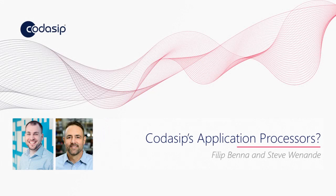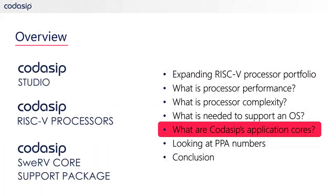Welcome back to the fifth installment of the CODISIP blog series discussing all things RISC-V. My name is Steve Winandi and with me is Philip Benna, Product Marketing Engineer at CODISIP. In our first installment, we took a high-level look at CODISIP's RISC-V processor portfolio. In the second video, we went into more detail on processor performance and what you need to consider when picking your processor. The third video covered the complexities involved with processor selection and design. In the fourth video, we discussed the use of an operating system. And in this chapter, we will be discussing the new application cores available from CODISIP and how you can use them effectively.